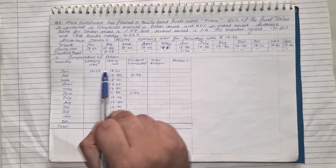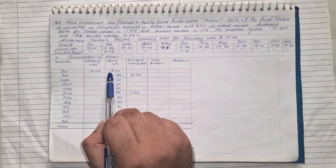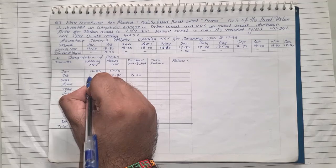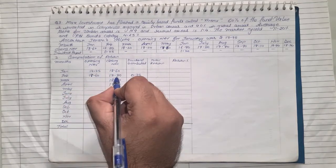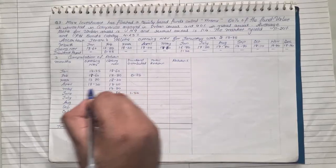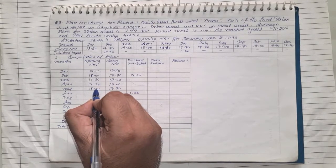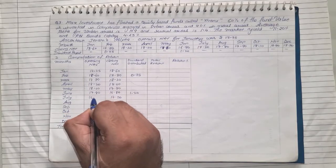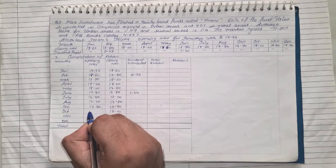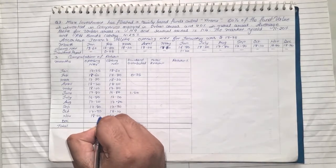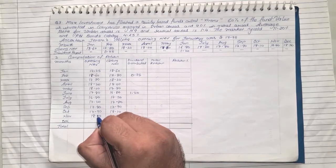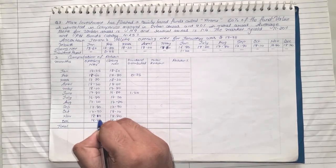Let us see how we can fill up the entire table. NAV opening was given, closing is given for the first year. Always remember first month, since the first month closing will become next month opening, so closing was 18.60, so this will become opening 18.60. Again second month closing will become third month opening, third closing will become fourth opening, fourth closing will become fifth opening and so on, so we'll just fill up this thing first.